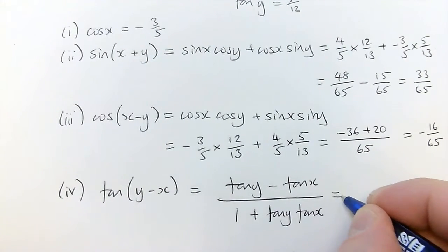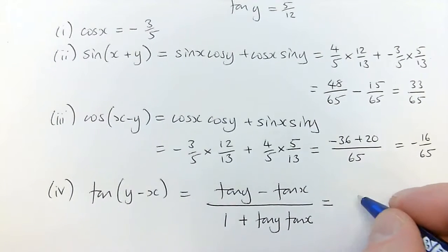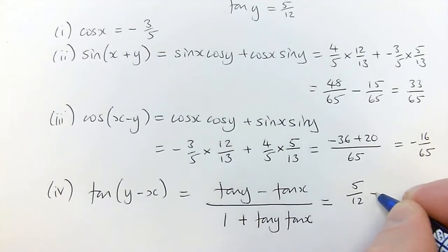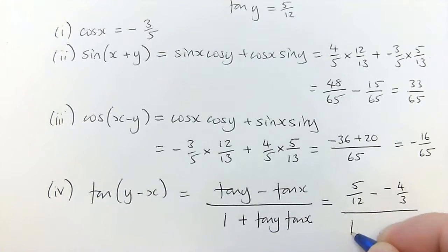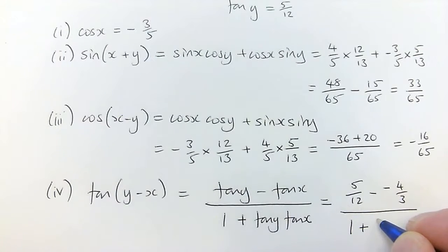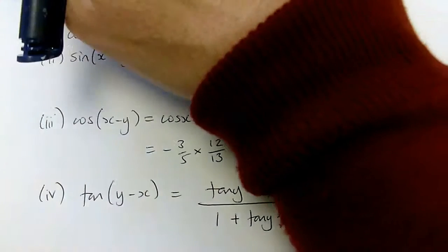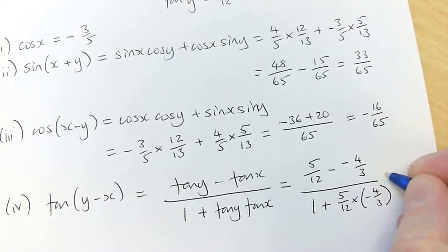So I substitute in tan y and tan x. So that was tan y was five twelfths, take away tan x was minus four thirds, all over one plus tan y, which is five twelfths, times minus four thirds. And I can work that out, or I can do it on my calculator. And I get a sixty-three sixteenths, which is the final answer.